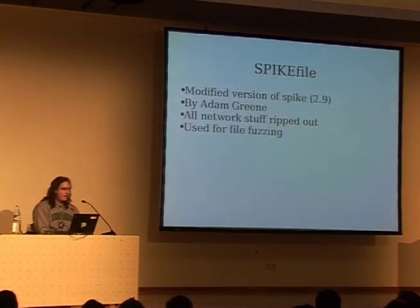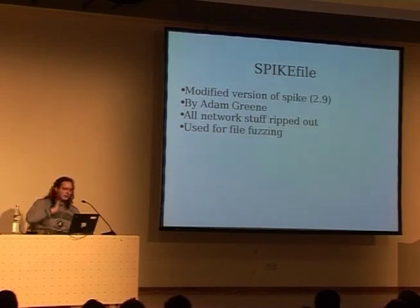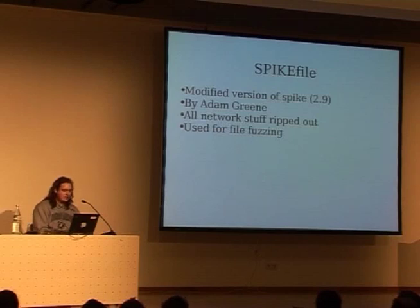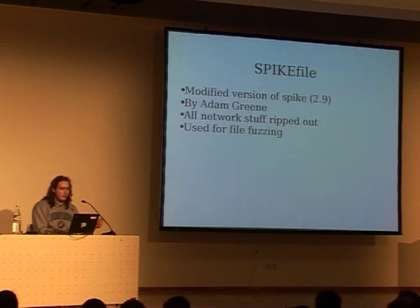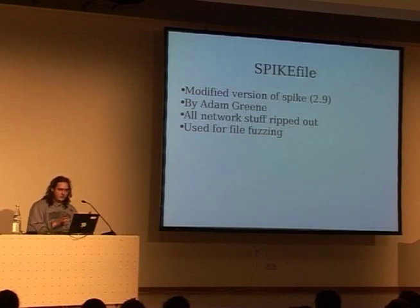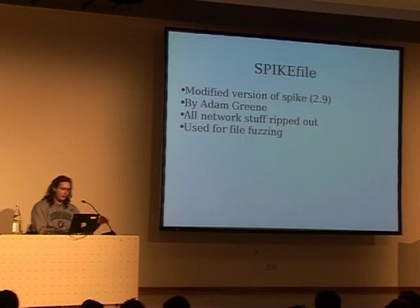Then there's Spike File, which is sort of like Spike — basically it's Spike 2.9, and it's a modification which Adam Green from iDefense made. Basically all the network stuff got ripped out and replaced with code to fuzz files. You get the same scripting language that Spike has, but now you can fuzz not only networks but also files.